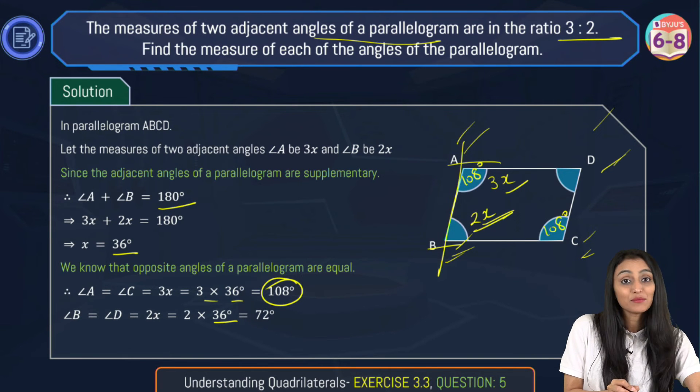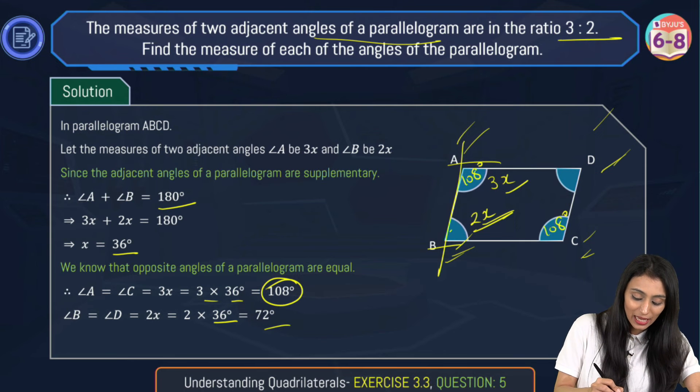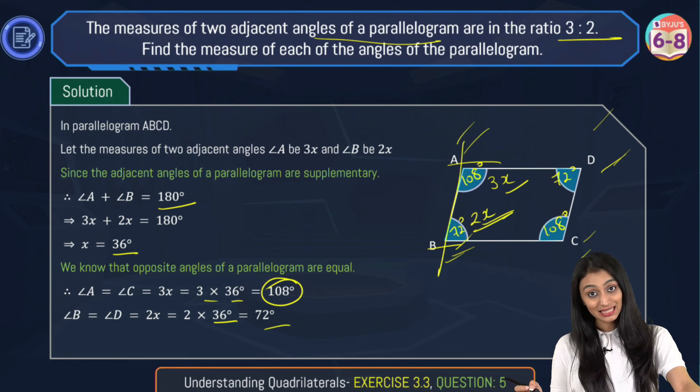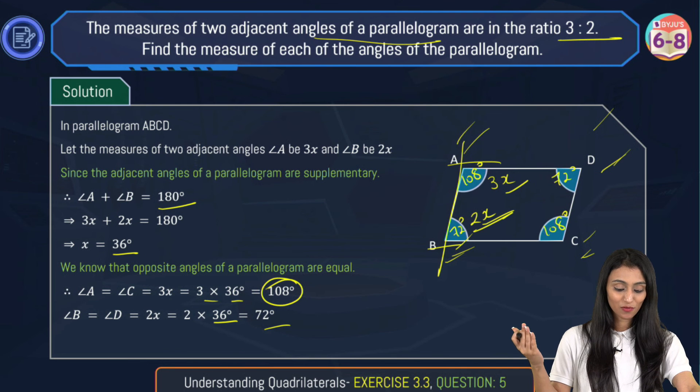Similarly 2 times x, that's 2 times 36 degrees which is 72 degrees. If this is 72 degrees, this is also 72 degrees. Angle B and D because they are the opposite angles of a parallelogram.